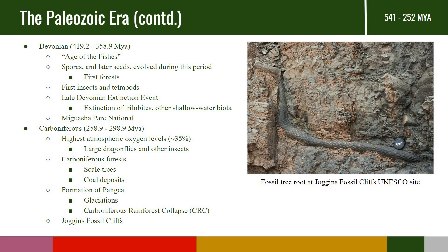Then we get to the Devonian, which is the true age of the fishes, where we see a lot more diversity in fish life. We also see the evolution of spores and later seeds during this period, so we actually get the world's first forests. We also get the first insects and the first tetrapods, or animals that walk on four legs. Towards the end of the Devonian we get the late Devonian extinction event, which led to the extinction of the trilobites as well as other shallow marine life. If you want to see some fossils from the Devonian, you can go to Miguasha Parc National in Quebec.